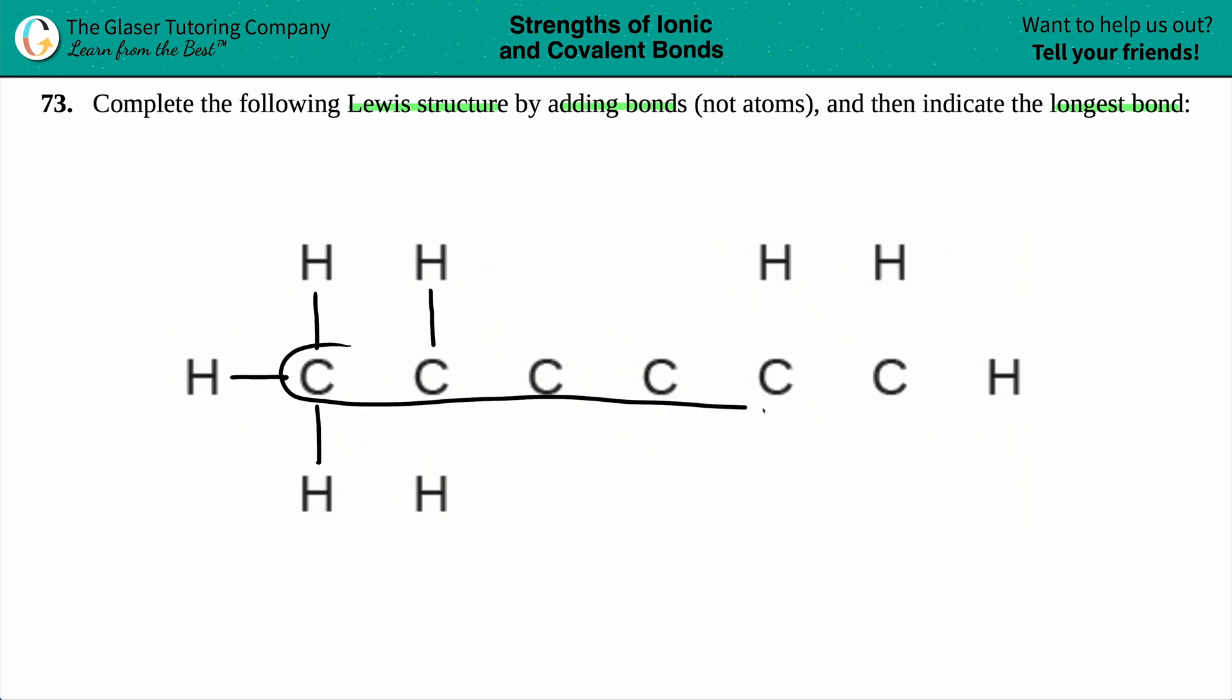The backbone, especially in organic chemistry, is always the carbon chain. Then these hydrogens: this one's bound here, this one's bound to this one, and this one is here. Remember carbon wants to have the octet—it wants to have a total of four bonds to make it neutral.